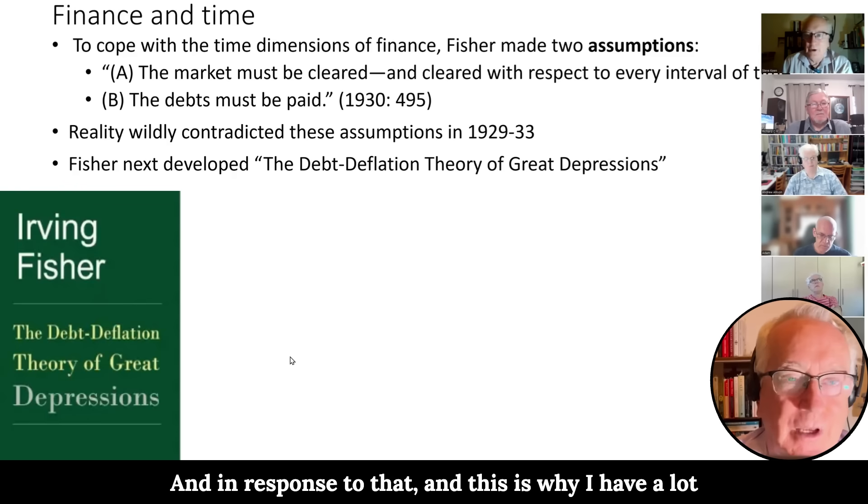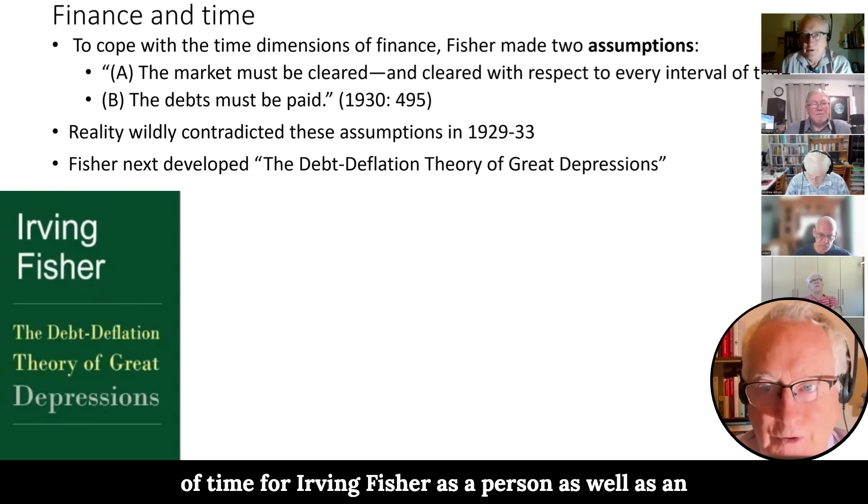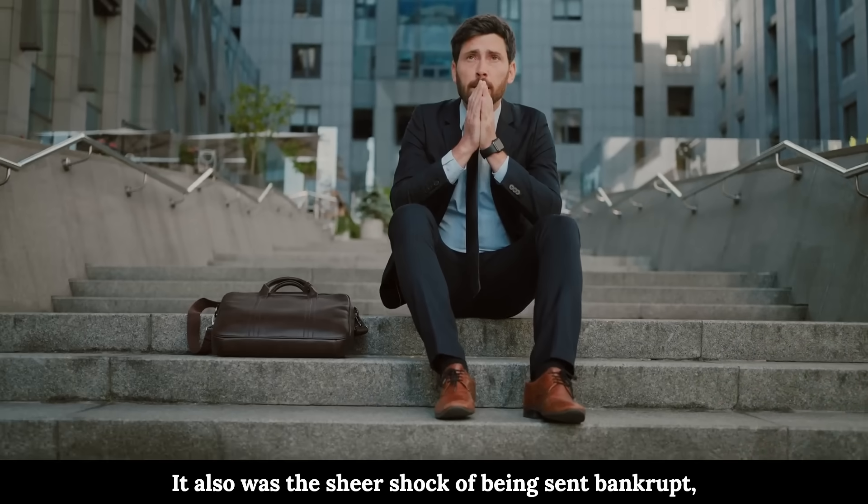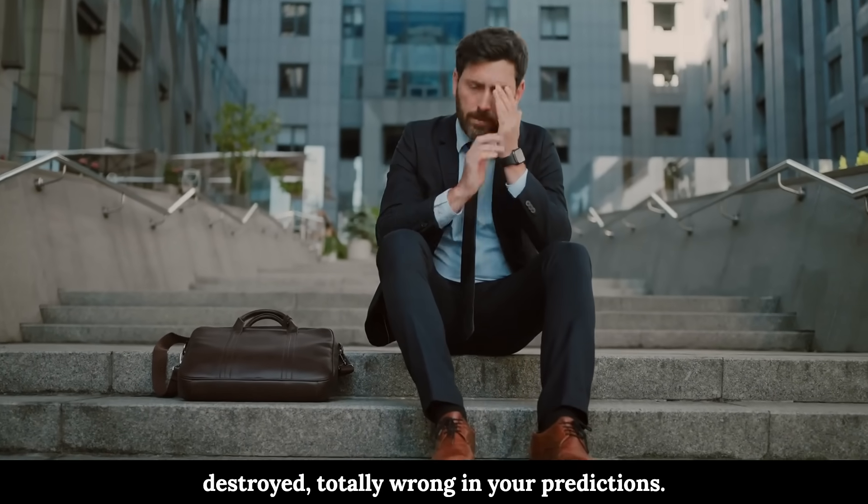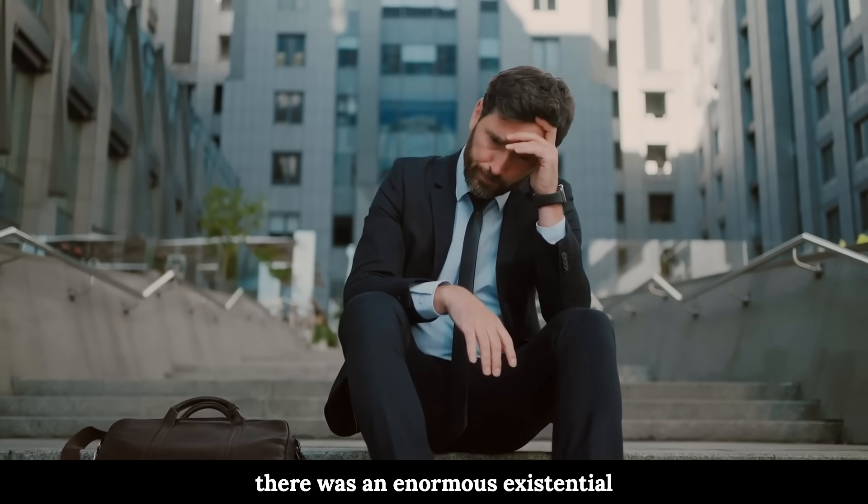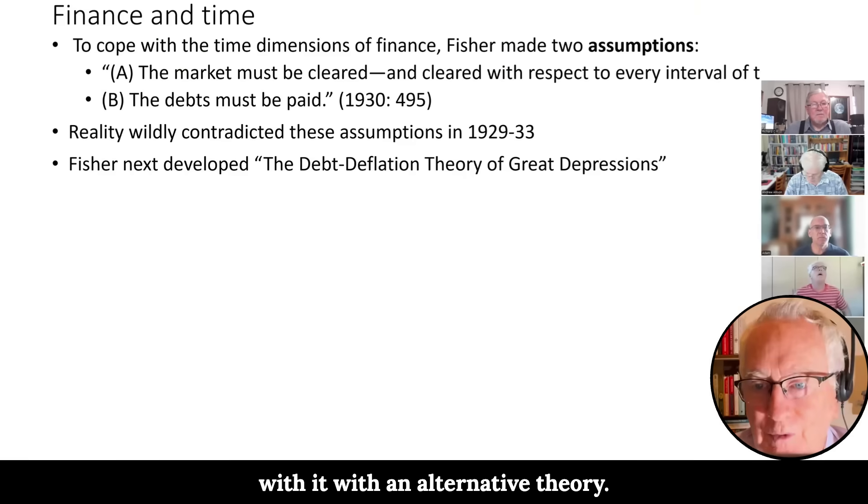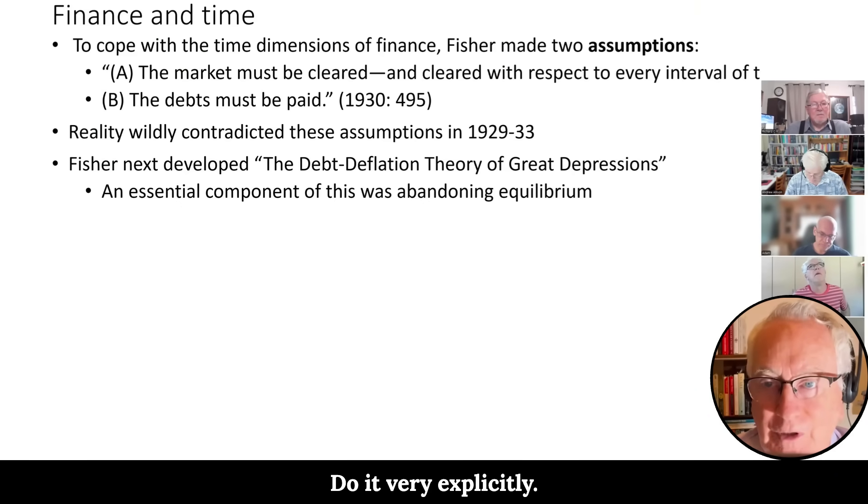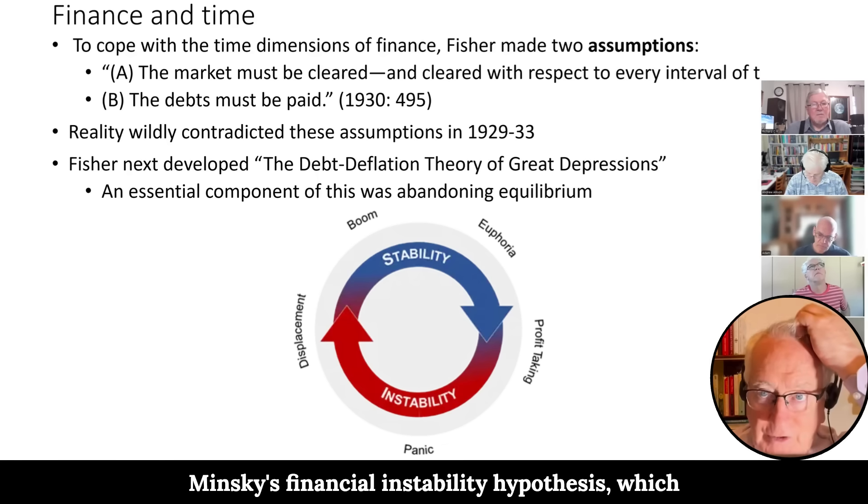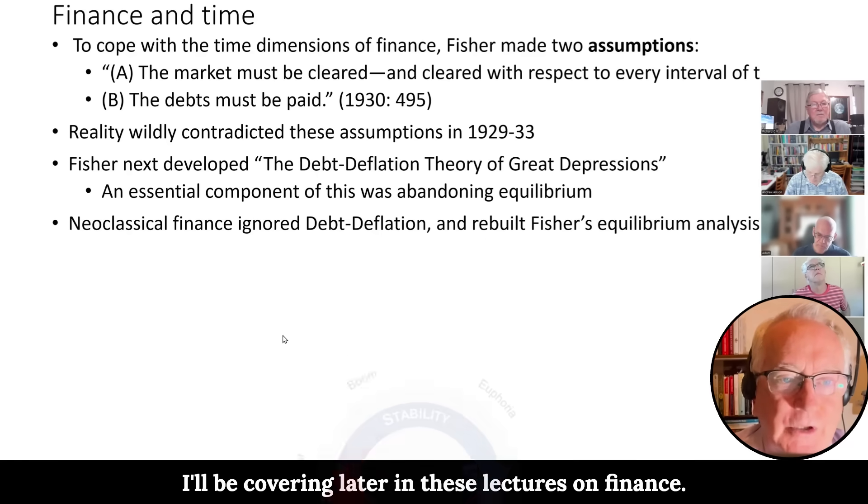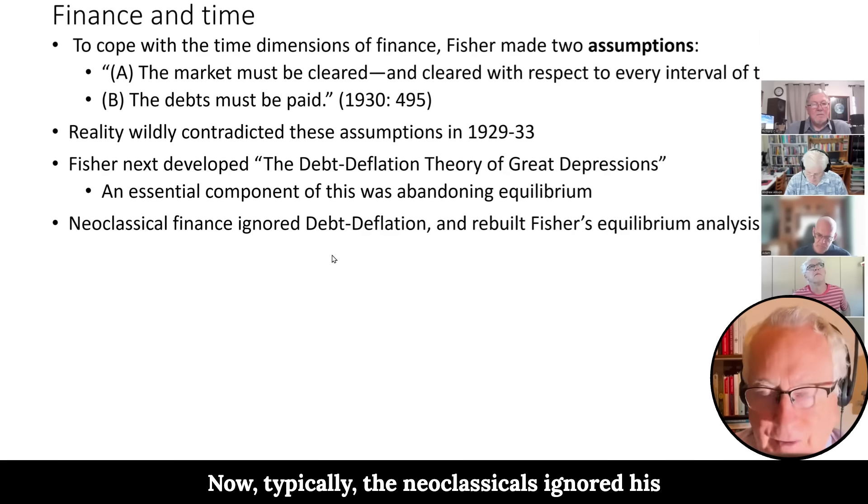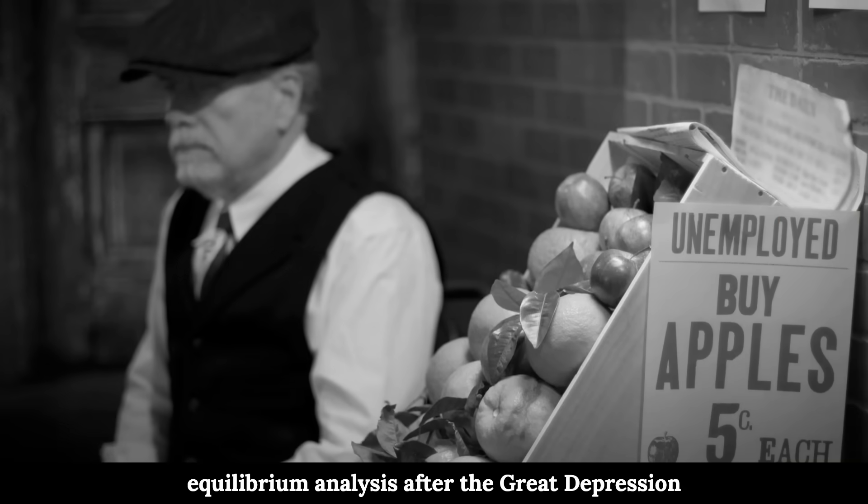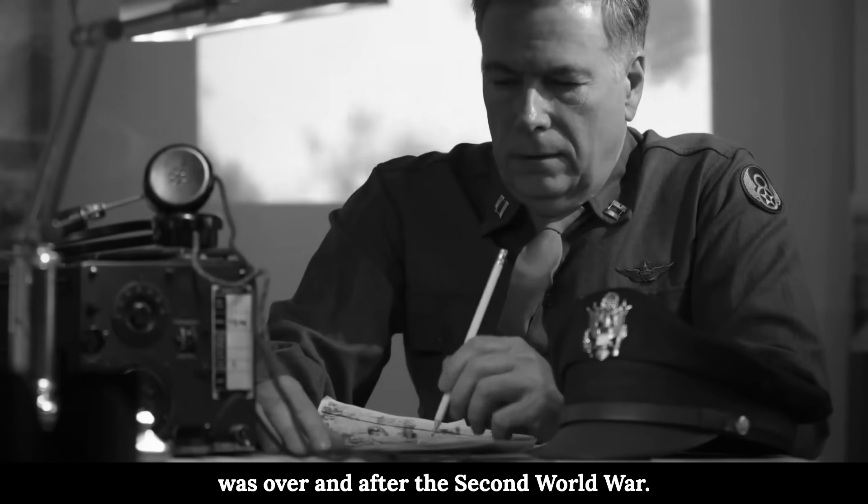And in response to that, and this is why I have a lot of time for Irving Fisher as a person as well as an economist, he had the courage to change his mind. It also was the sheer shock of being sent bankrupt, destroyed, totally wrong in your predictions. There was an enormous existential experience for him, but he came through with it with an alternative theory. And an essential component of that was abandoning equilibrium very explicitly. And I'll talk a bit more of that when I explain Minsky's financial instability hypothesis, which I'm covering later in these lectures on finance. Now typically, the neoclassicals ignored his work on debt deflation and they rebuilt his equilibrium analysis after the Great Depression was over and after the Second World War.